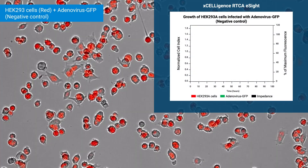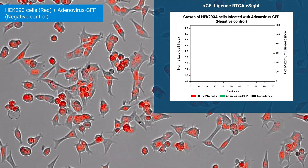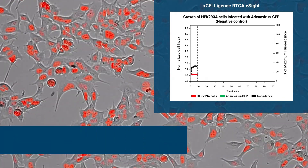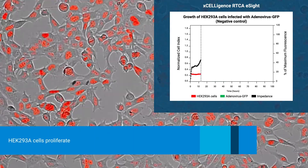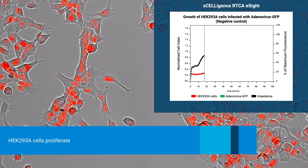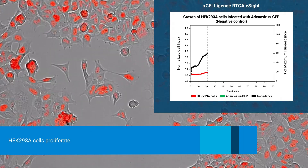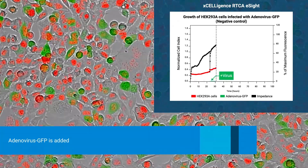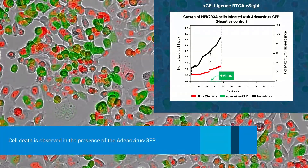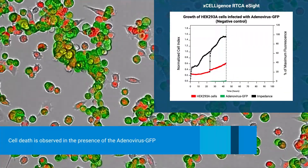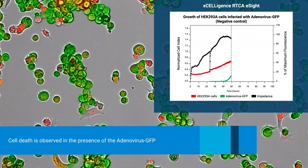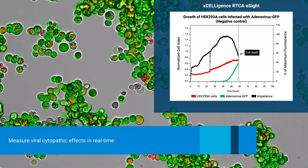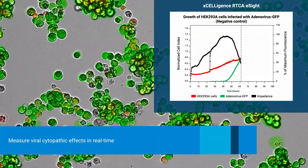As a negative control, HEK293 cells are infected with GFP-expressing adenovirus in the absence of drug. Cell health and behavior are monitored using impedance and live cell imaging simultaneously. After seeding, cells adhere and proliferate. An adenovirus encoding green fluorescent protein is added at 24 hours, and cell death is observed as the adenovirus infection progresses. The e-site automatically captures viral cytopathic effects in real time, from multiple perspectives.